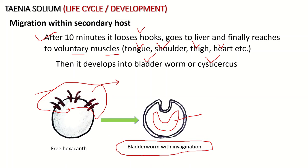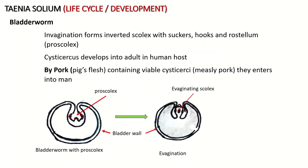Towards the anterior side of the bladder worm, invagination takes place — the anterior side folds inward forming an inverted structure called the proscolex. The proscolex has hooks, suckers, and a rostellum. This invaginated structure is the proscolex, and it takes about 10 weeks to develop in the pig.